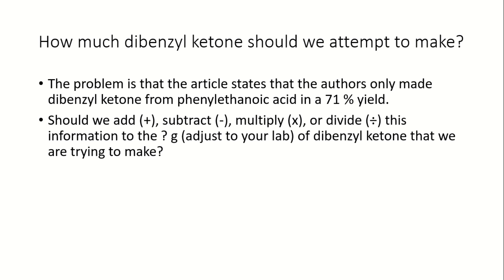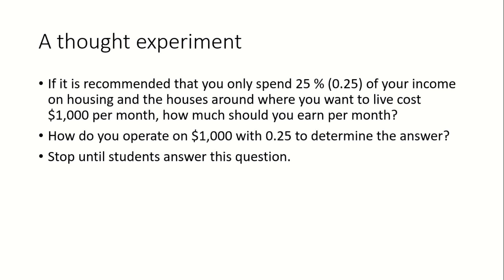The problem is that when you read the article, you will see that the authors only made D-benzylketone from phenylacetic acid in a 71% yield. So the question here is: should we add, subtract, multiply, or divide this information by the amount of D-benzylketone that we are trying to make?